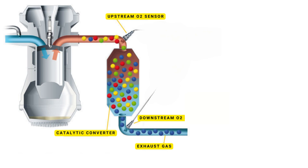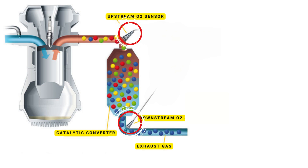To ensure it's working correctly, the oxygen sensors monitor the oxygen levels in the exhaust process. The catalytic converter has two oxygen sensors — one located upstream before the converter and one downstream after it.